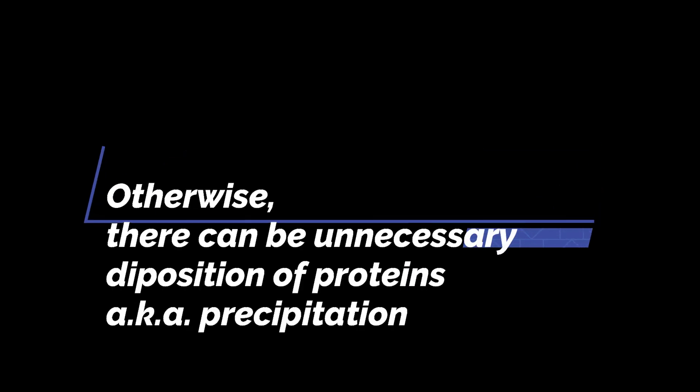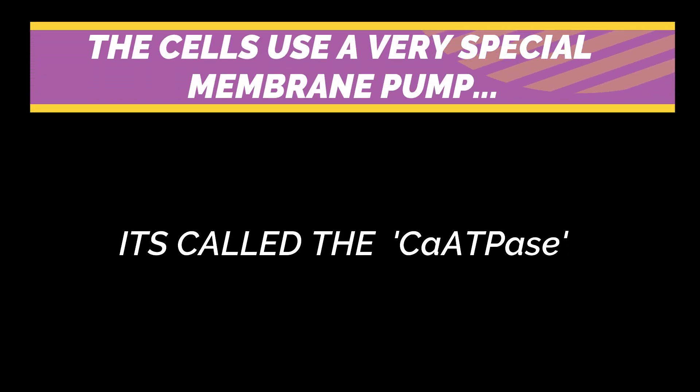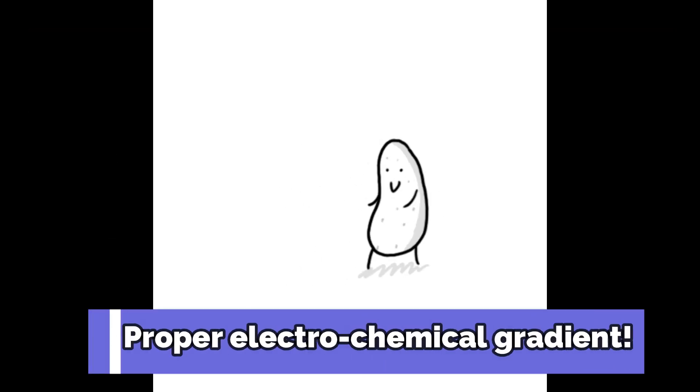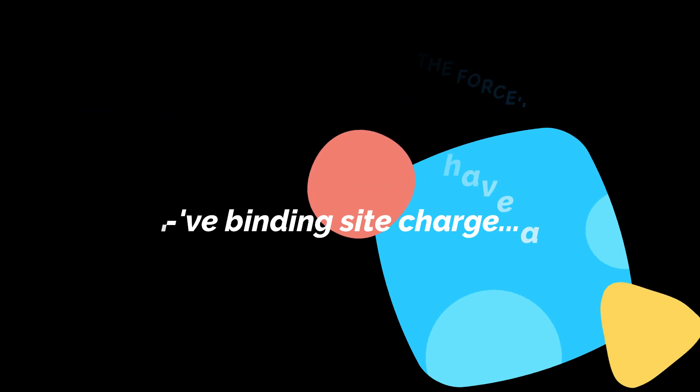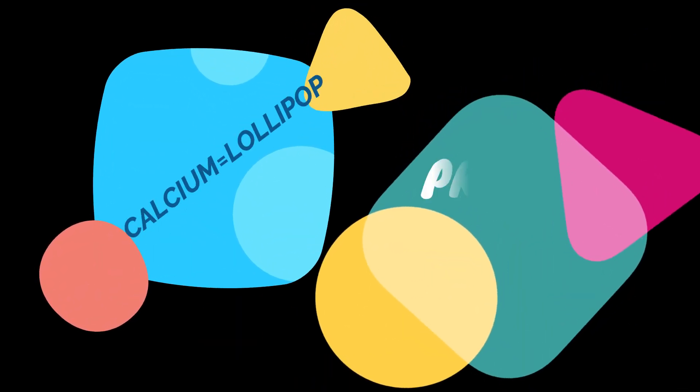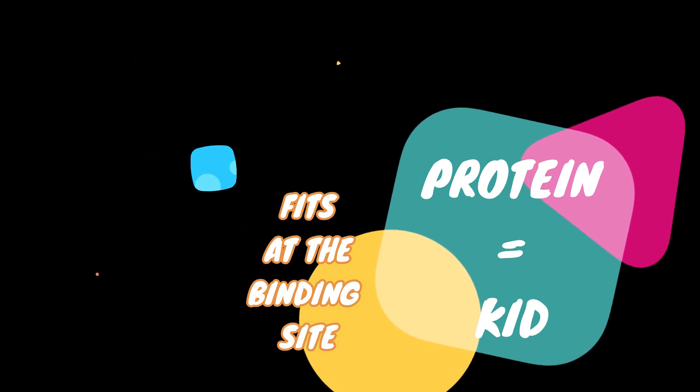Otherwise, there can be unnecessary deposition and precipitation of proteins. The cells use a special membrane pump, calcium ATPase, to create an electrochemical gradient. As calcium has an extremely strong interaction with proteins, you can think of calcium as the lollipop and the protein as a kid wanting to eat the lollipop — and the process starts.